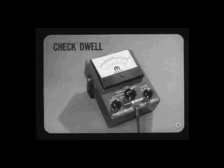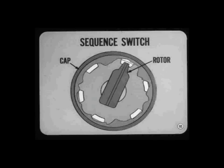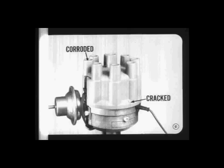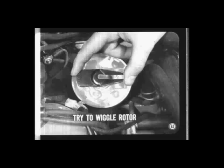And that brings us to the distributor cap. The distributor cap and rotor are simply a sequence switch which completes the secondary circuit to each of the spark plugs in the correct firing order. Corroded terminals or cracks are the most common kinds of distributor cap trouble. A visual inspection will usually disclose these conditions. However, carbon tracking and hairline cracks can be tricky conditions to spot. As a matter of routine inspection, try to wiggle the rotor with your fingers to make sure it fits tightly on the distributor shaft. A visual inspection is all that's needed to spot a pitted or burned rotor.